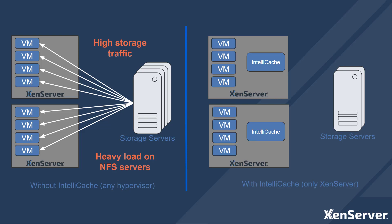XenServer provides a feature called IntelliCache to help reduce the load on the remote storage by making use of the local storage in the hypervisor hosts to provide a persistent read-cache of the data being read from the master image, and can significantly reduce the load on central storage. This will optimise storage load for VMs created using MCS when thin provisioned onto storage, without impacting the agility of the VMs. The VMs can be started on any host that has access to the storage being used.